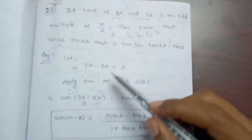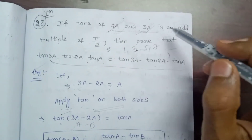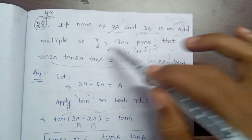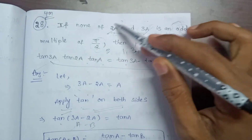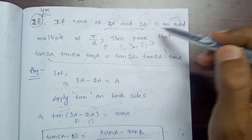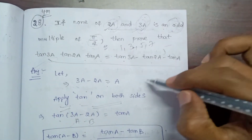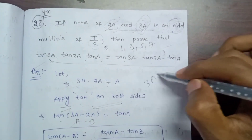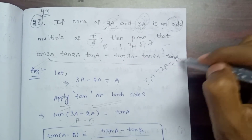The condition is important here: none of 2a and 3a is an odd multiple of pi by 2. Here we have 2a and 3a, and the difference 3a minus 2a is equal to a. This ensures the tan function is defined for the relevant angles.